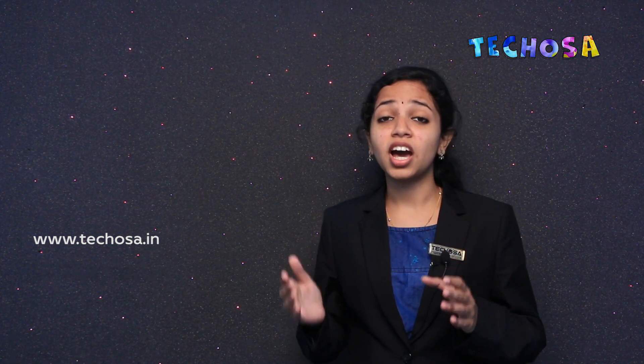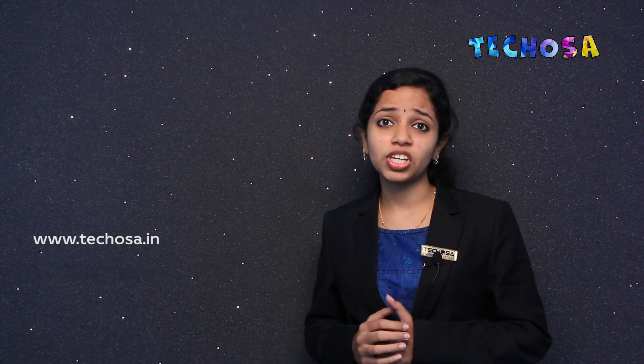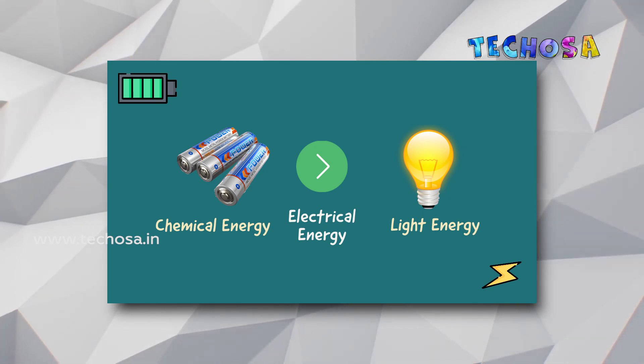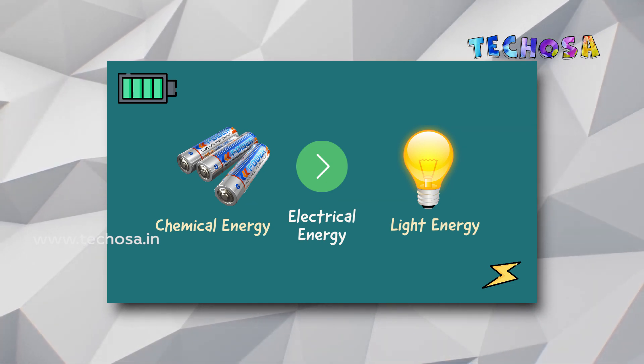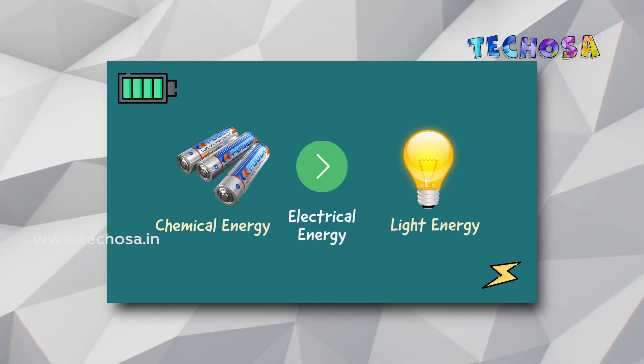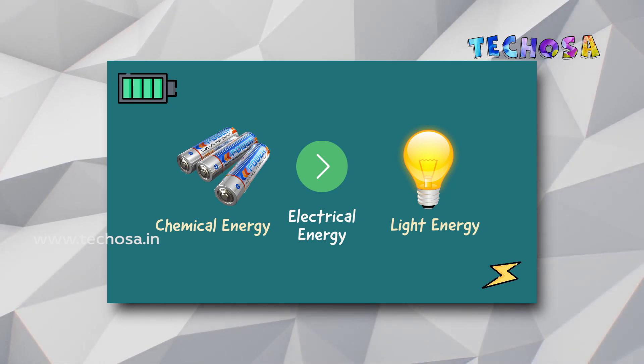Now let's look at how a battery works to give us current. We know that a battery can store energy. They store energy in the form of chemical energy and convert it into electrical energy when needed. This means that a combination of chemicals inside the battery produces the flow of electrons. The common type of battery that we use in toy cars and flashlights is called a dry cell.